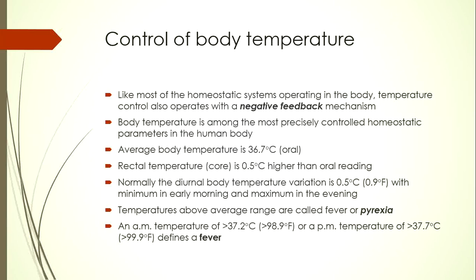The average body temperature checked orally is 36.7 degrees Celsius. Rectal temperature, which precisely represents core temperature, is usually 0.5°C or 0.9°F higher. There is normally a diurnal variation with early morning temperatures 0.5°C less than late evening temperatures. An early morning temperature above 37.2°C or an evening temperature above 37.7°C defines fever.